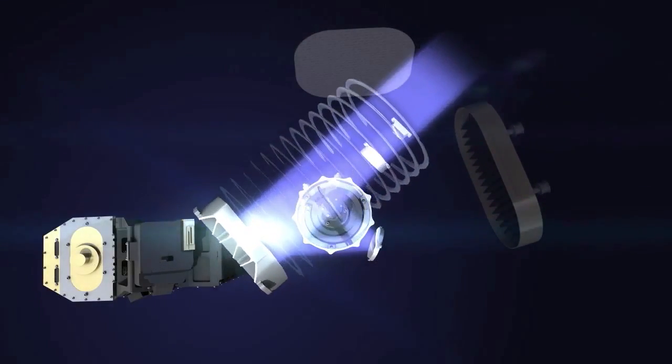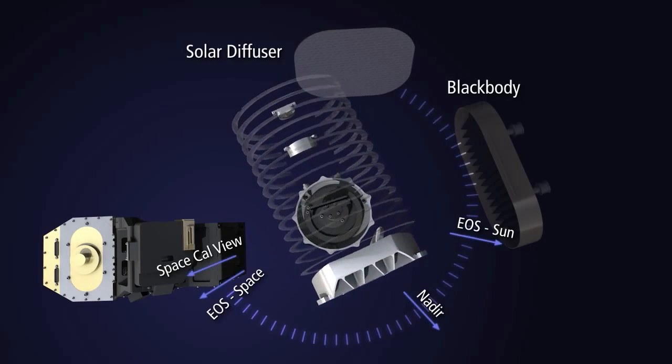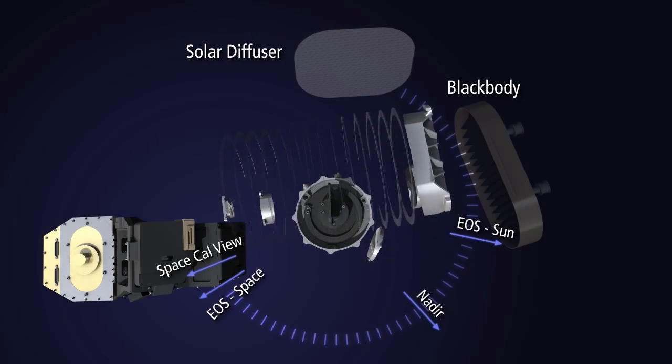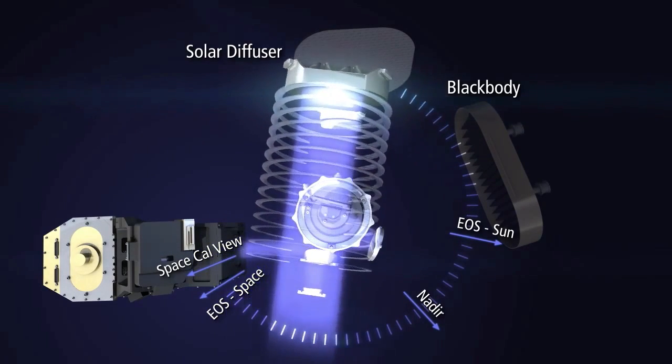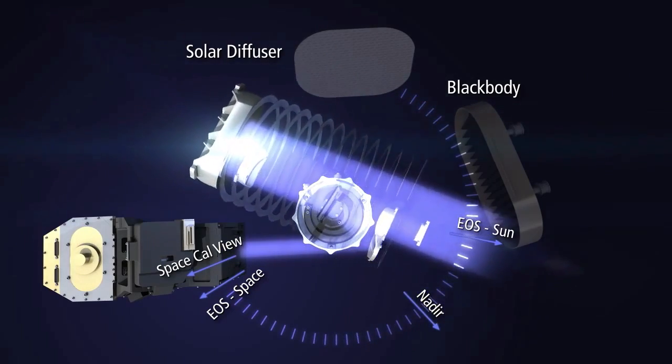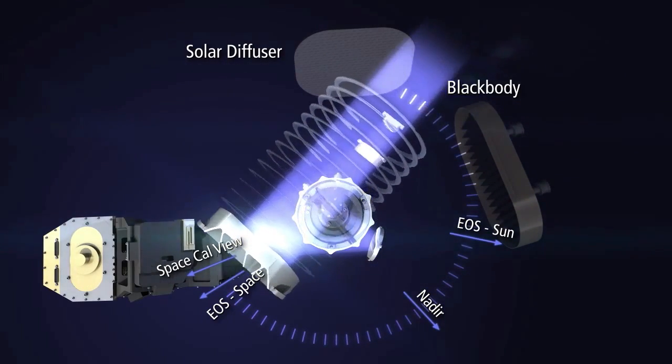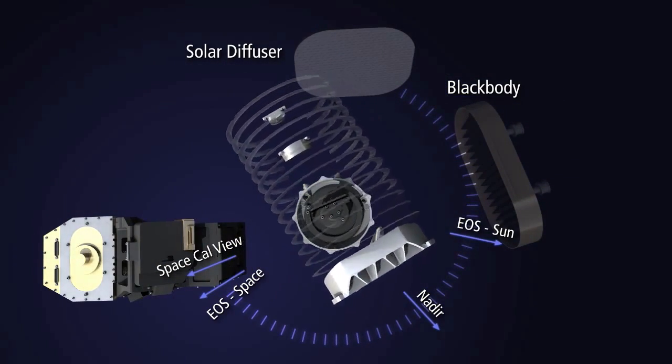Besides Earth, VIRS looks at deep space to measure the zero signal level and at internal calibration sources. The various reference objects help to produce very accurate measurements across the entire spectrum of collected light.